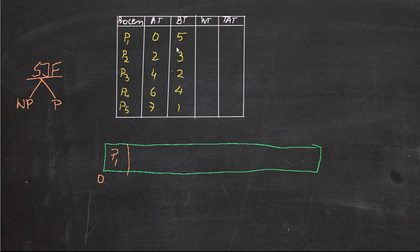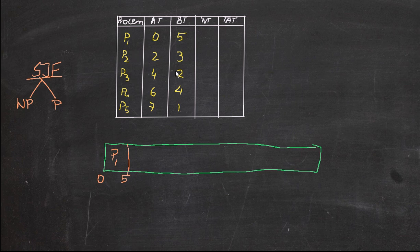We just do the process fully; we don't do it incompletely. P1 will be executed for 5 seconds. Within those 5 seconds, only P2 and P3 have arrived — the arrival time of P1 is 0, P2 is 2, and P3 is 4. So within 5 seconds P2 and P3 have already arrived in the CPU. We can now choose the shortest job first from P2 and P3, which is clearly P3.